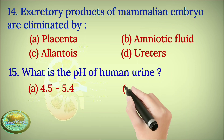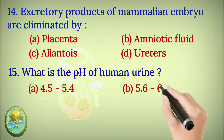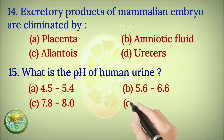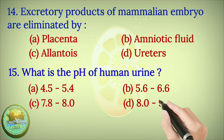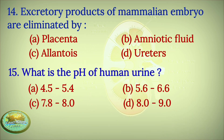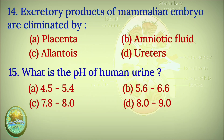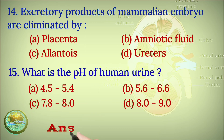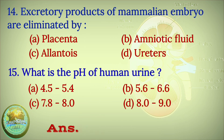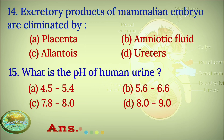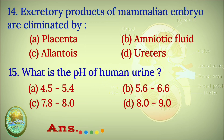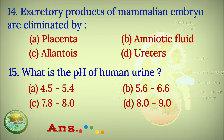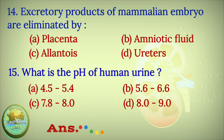Question 15 — the last question: What is the pH of human urine? Is it 4.5 to 5.4, 5.6 to 6.6, 7.8 to 8.0, or 8.0 to 9.0? You will get your answer after a few seconds.